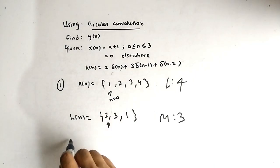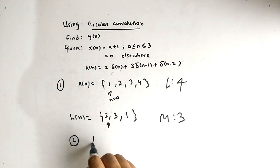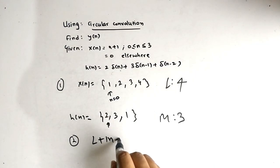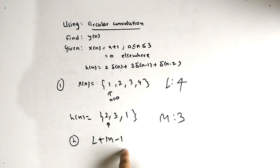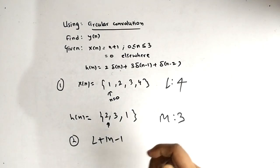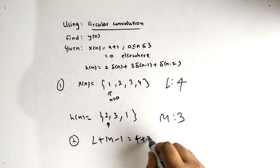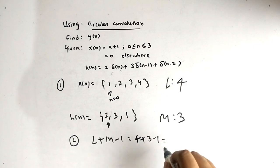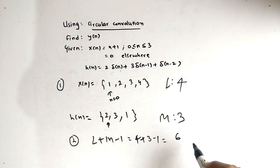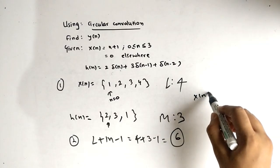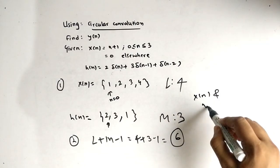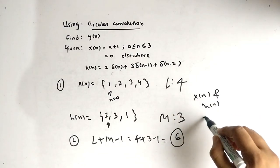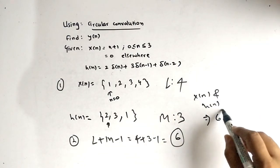The length can be made equal using the formula M + N − 1. That gives us 4 + 3 − 1 = 6. This means the length of both x(n) and h(n) should be made equal to 6.